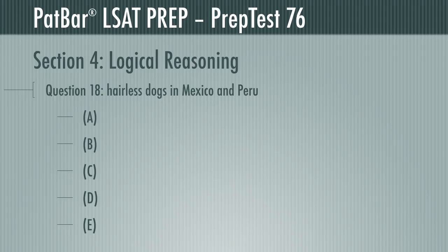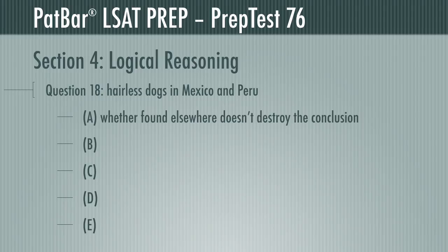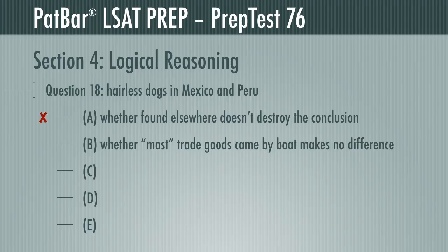Question 18 postulates that since hairless dogs do not exist in the wild and could not have traversed the mountainous region between western Mexico and the coast of Peru, some of them must have been taken from one site to the other by people in boats. One of the five assumptions is required for the argument to work. A makes no difference — if the opposite were true, that hairless dogs were found elsewhere, the conclusion can still work. So what if most trade goods came by boat to western Mexico? Assuming the opposite has no effect on whether hairless dogs arrived that way from Peru.